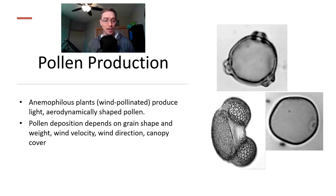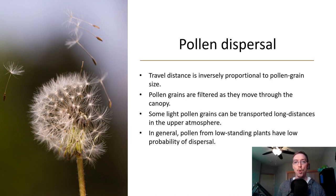Pollen dispersal travel distance is inversely proportionate to pollen grain size. Pollen grains are filtered as they move through the canopy. Some light pollen grains can be transported long distances in the upper atmosphere. In general, pollen from low standing plants have a low probability of dispersal. They're not up near the tops of trees where the atmospheric boundary layer is starting to redevelop. It's going to be more effective at transporting pollen away from the epicenter.